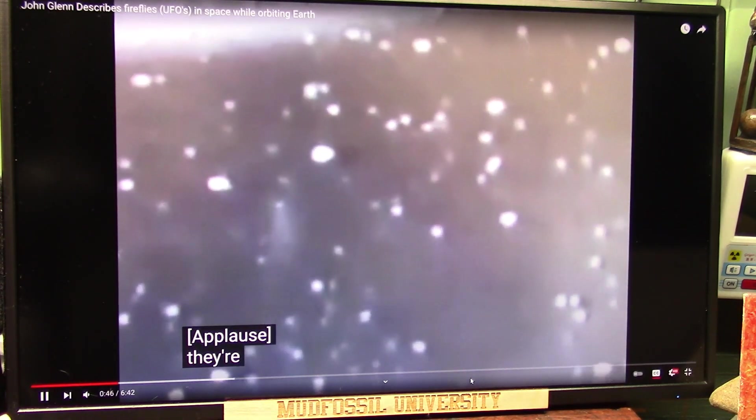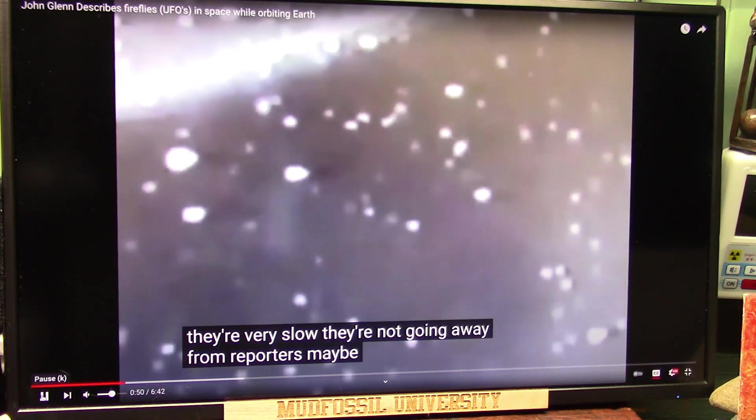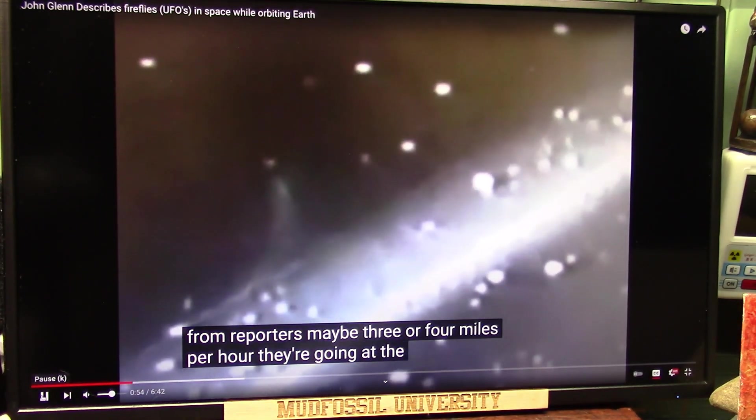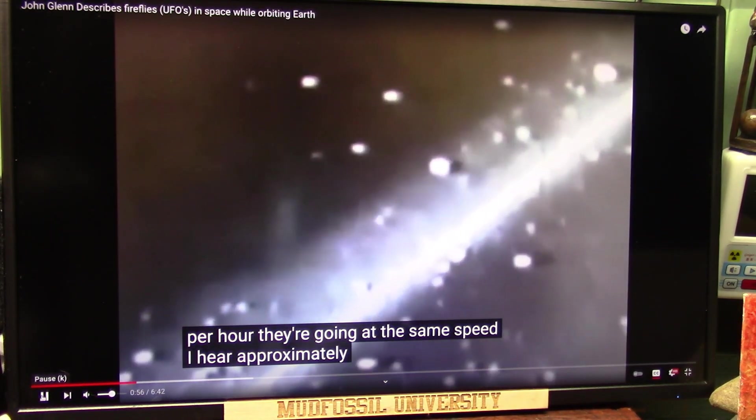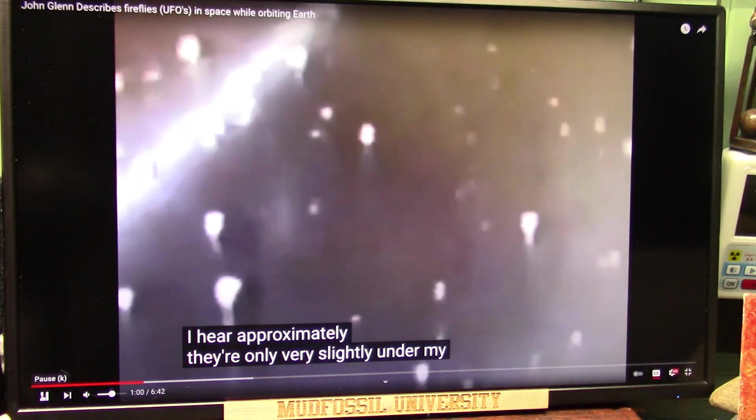They probably averaged maybe seven or eight feet apart. But I can see them all down below me also. Negative, negative. They're very slow. They're not going away from me more than maybe three or four miles per hour. They're going at the same speed I am approximately. They're only very slightly under my speed.